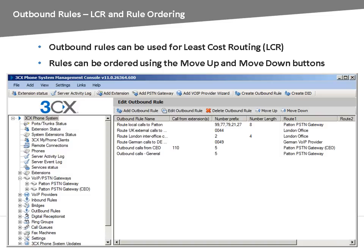Bridges will be covered in more detail in the advanced track. In certain situations, you might need to define the order of the rules. For example, you want all outbound calls with the prefix of 5 to go through a gateway. However, you want calls starting with the prefix 5 from the CEO's extension to go through another gateway that has a line reserved for him. In this case, the outbound rule for the CEO extension would be given a higher priority and thus needs to be moved up on top of the other rule.